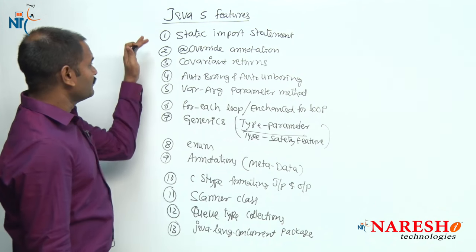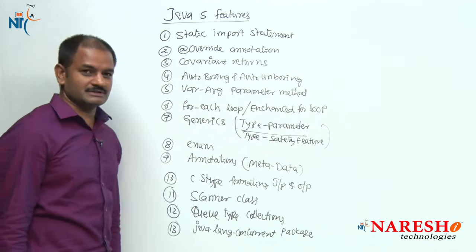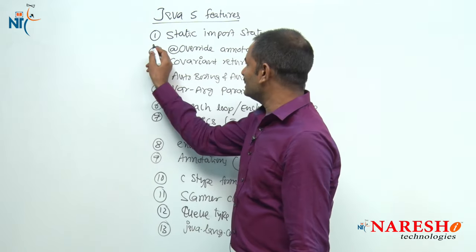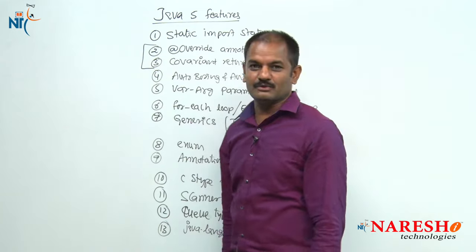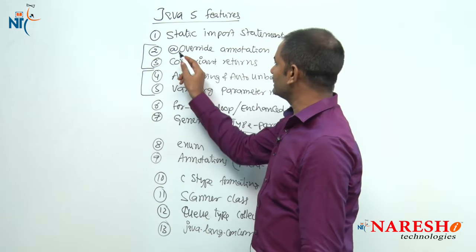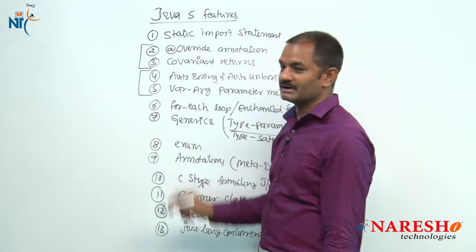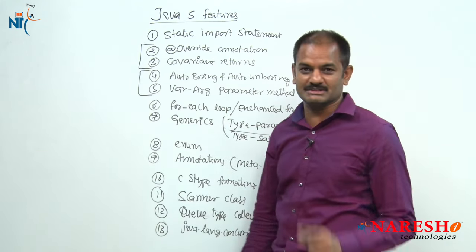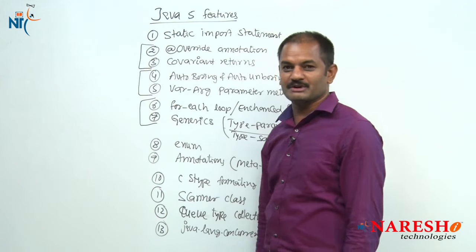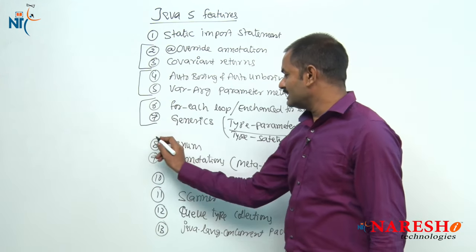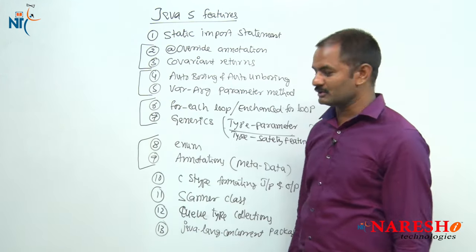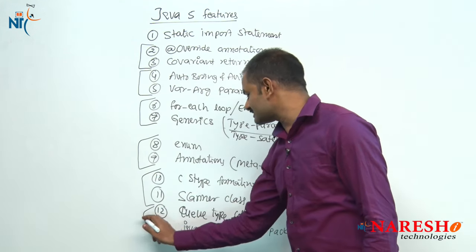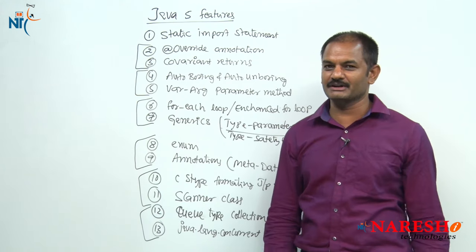Please notice that while listing these 13 features, I am reading them in pairs. @Override annotation and covariant returns as one section; auto-boxing, auto-unboxing, and varargs parameter method as one section; for-each loop and generics together; enum and annotations together; C-style formatting and Scanner together; and Queue-type classes with the java.util.concurrent package together. There is meaning behind this grouping.